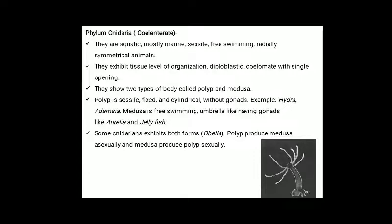Phylum Cnidaria (Coelenterata): they are aquatic, mostly marine, sessile or free swimming, radially symmetrical animals. They exhibit tissue level of organization. Diploblastic, acoelomate with a single opening. They show two types of body forms: polyp and medusa. Polyp is sessile, fixed and cylindrical without gonads — example, Hydra. Medusa is free swimming, umbrella-like, having gonads — example, Aurelia and jellyfish. Some cnidarians exhibit both forms, i.e. Obelia, in which polyp produces medusa asexually and medusa produces polyp sexually. In this slide we have a structure of Hydra.